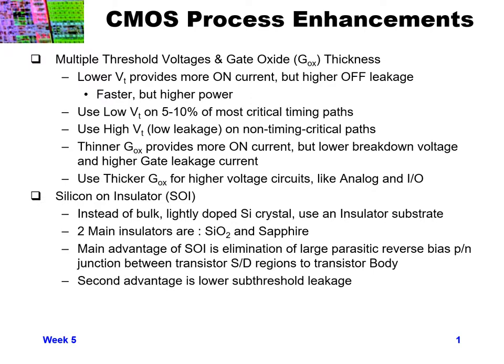What you might wind up doing when designing your chip is you'll have some paths that are more timing critical than others. Maybe you'll use these low VT transistors on five to ten percent of your most critical timing paths, but use a higher VT, lower leakage, lower power on all of your non-timing-critical paths.